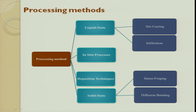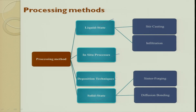The processing methods can be classified into liquid state, in-situ process, and solid state. In liquid state you start the matrix in liquid form and then try to make a composite. You can also have a solid state, a deposition technique, and an in-situ technique. In-situ techniques basically involve taking components A and B, maintaining pressure or temperature, and letting A and B react to form a composite in-situ.